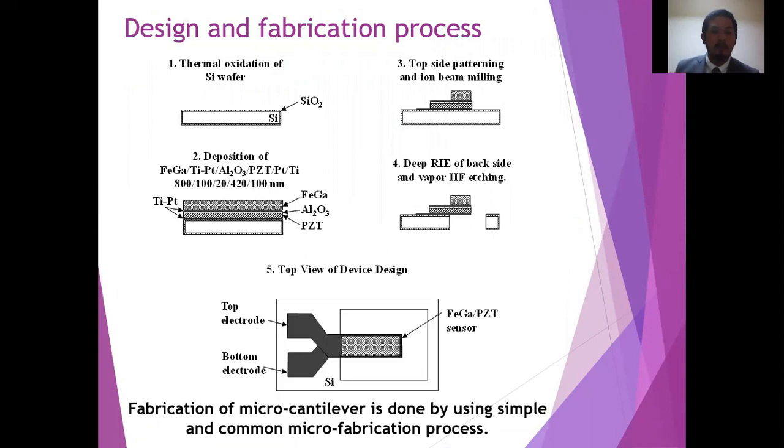Fabrication of the device can be explained in four big steps. First, we do the thermal oxidation of a silicon wafer as a base substrate. Second, we deposit the materials. We deposit platinum and titanium with magnetron sputter, then deposit the PZT using the Sol-Gel method, do atomic layer deposition to deposit the alumina, and again RF magnetron sputter to deposit titanium and platinum. Finally, we deposit the Galphenol with ion beam sputter. Third, the cantilever structure is patterned by photolithography and ion beam milling. Fourth, release of cantilever structure by backside deep RIE and vapor HF etching.